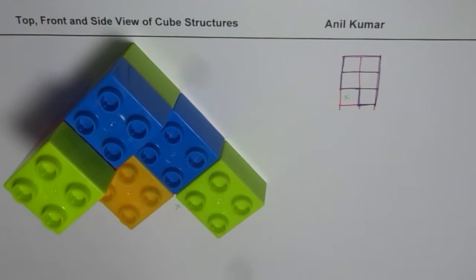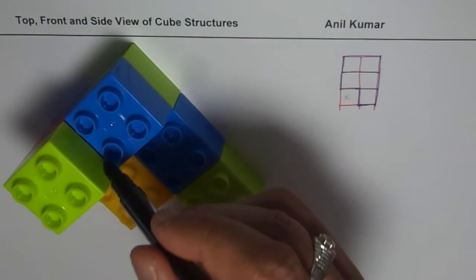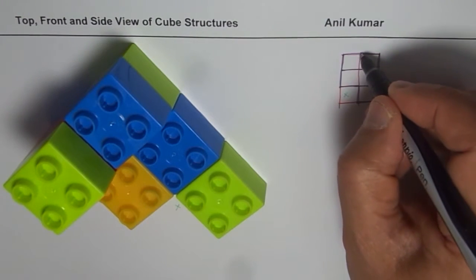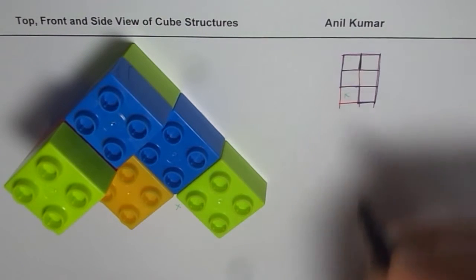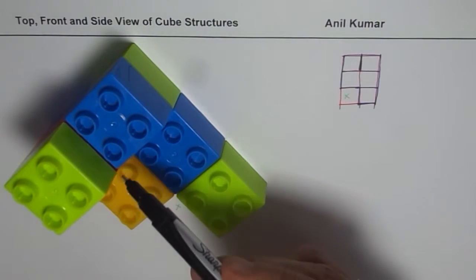Now, one more thing you notice from the top is change in depth. So here at this position, you see a change in depth. How do you reflect that? This change in depth will be reflected with a solid line. So that is a solid line which reflects this change in depth.